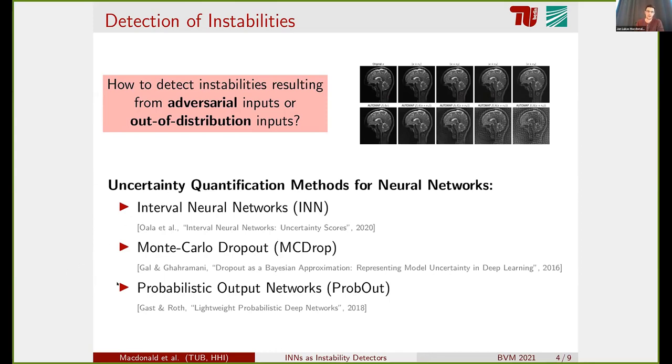In a nutshell, all three of these methods use some standard baseline neural network that was trained on the data, and then modify it in a way that instead of one output, it now produces two outputs. One is the original reconstruction, and the second one is the pixel-wise uncertainty score. So it gives you an output of the same size as the reconstructed image, but pixel-wise gives you an uncertainty score.